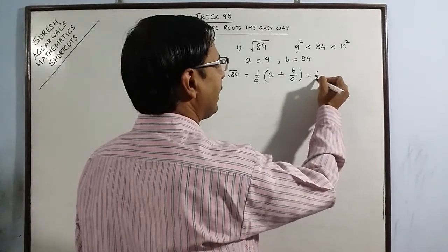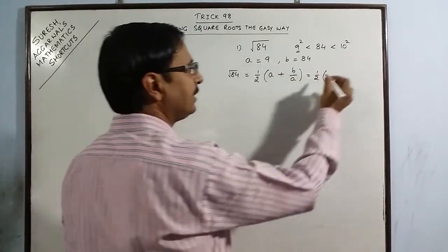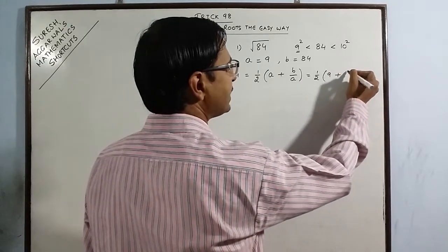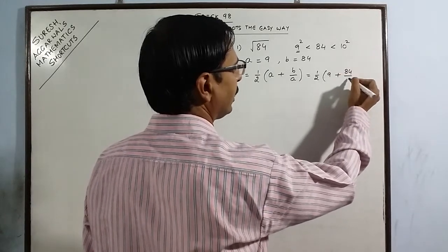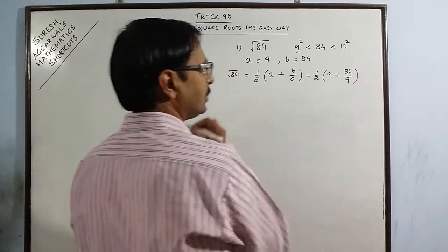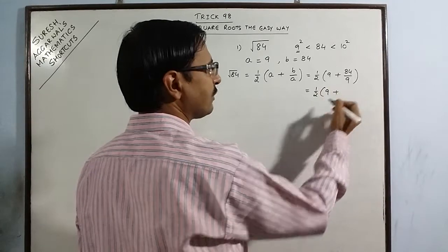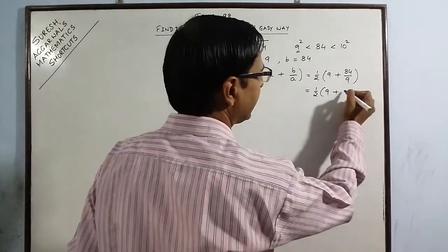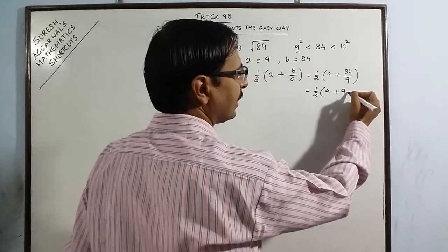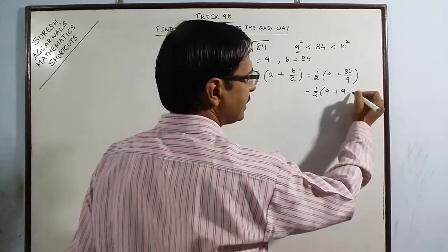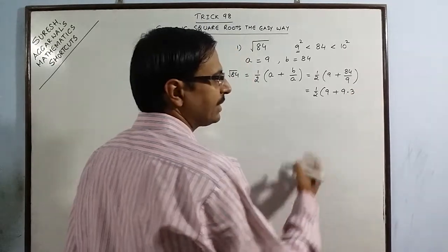Now let us see whether we get the value of square root of 84 or not through this method. So substituting the values, I have a as 9 and b as 84. So 84 upon again a that is 9. So this will be half of 9 plus, so if I divide 84 by 9, 9 nines are 81, I am left with 3, 30, 9 threes are 27, again 3.